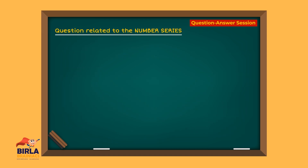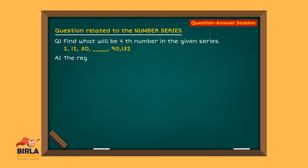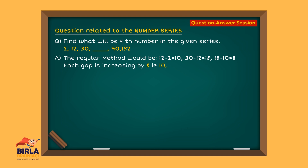Let's look at a question related to the number series. Find out what will be the fourth number in the given series. The regular method would be: 12 minus 2 is 10, 30 minus 12 is 18, 18 minus 10 is 8. Each gap is increasing by 8 — that is 10, 18, 26, 34, 42. By this logic, the third number will be 30 plus 26, which is 56.